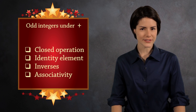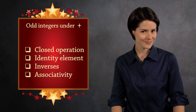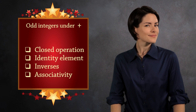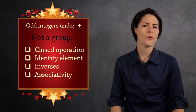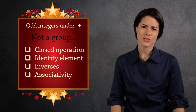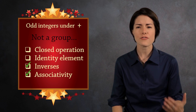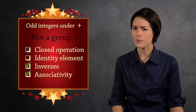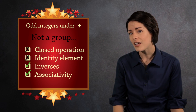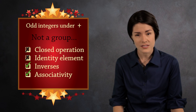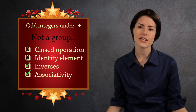The odd integers under addition? No, no way. Sure, it's associative and we have inverses. But if you add two odd numbers, you get an even number. And the identity element zero is not odd. You gotta have an identity.